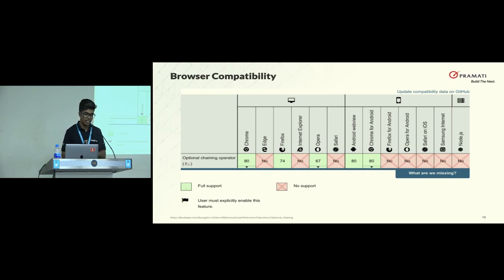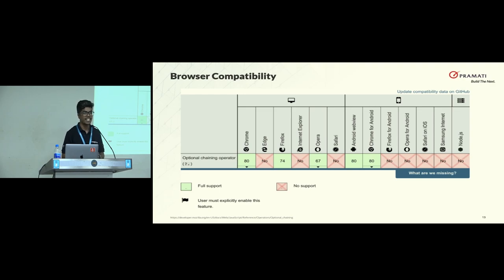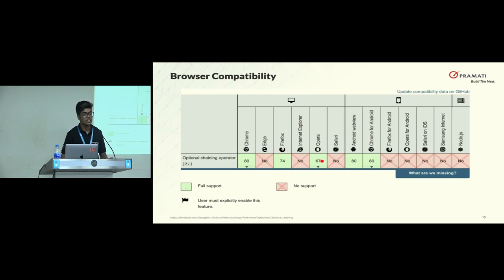Coming to browser compatibility: the current stage of optional chaining, according to TC39 which defines proposals for JavaScript, is stage four. That means development is completed and it can be included in the next version, whether you call it ES9 or ES10 — it's ready to be included. It's available in Chrome 80 as an experimental feature. I'll show you how to enable it in experimental JavaScript. For Firefox, it's available from Firefox 74, and for Opera it's available from 67. Once it's released as an ES proposal, other browsers will also include this feature in their upcoming releases.